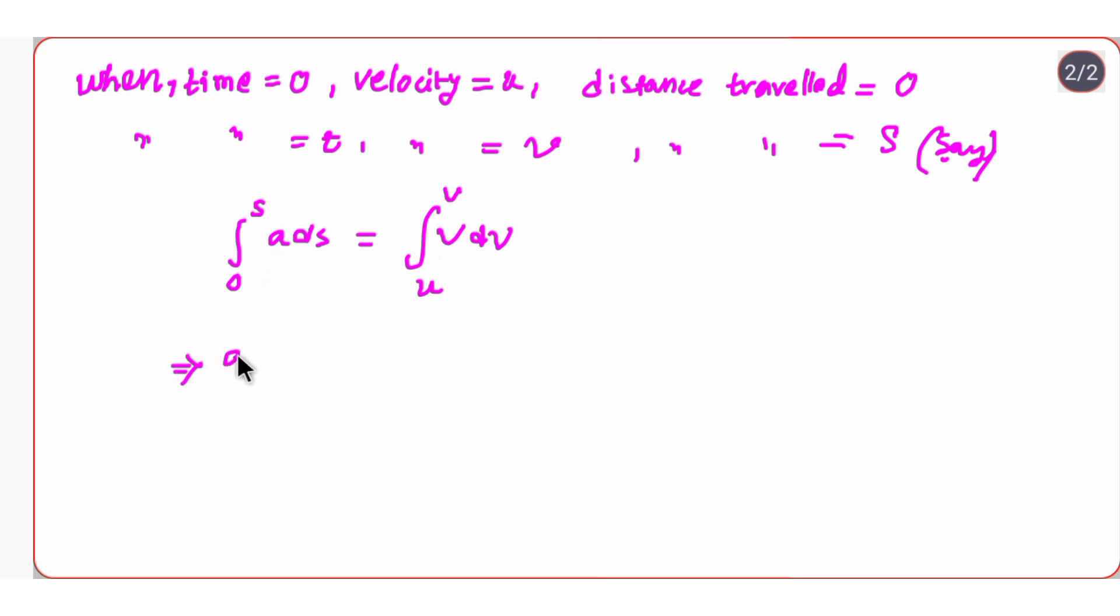Now a is a constant so a will get outside, so integration will be 0 to s ds and here integration u to v v·dv. So integration of ds is s with limit 0 to s, and integration of v·dv is v squared by 2 with integration limit u to v.